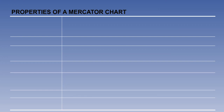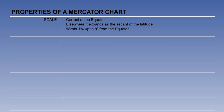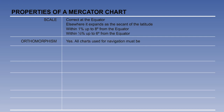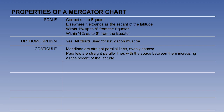So now let's summarise these properties. Scale: scale is correct at the equator; elsewhere it expands as the secant of the latitude. It is within 1% of the scale at the equator up to 8 degrees north or south, and within half a percent up to 6 degrees from the equator. The chart is orthomorphic — all charts used for navigation must be. The graticule: meridians are straight parallel lines, evenly spaced. Parallels are straight parallel lines, with the space between them increasing as the secant of the latitude.